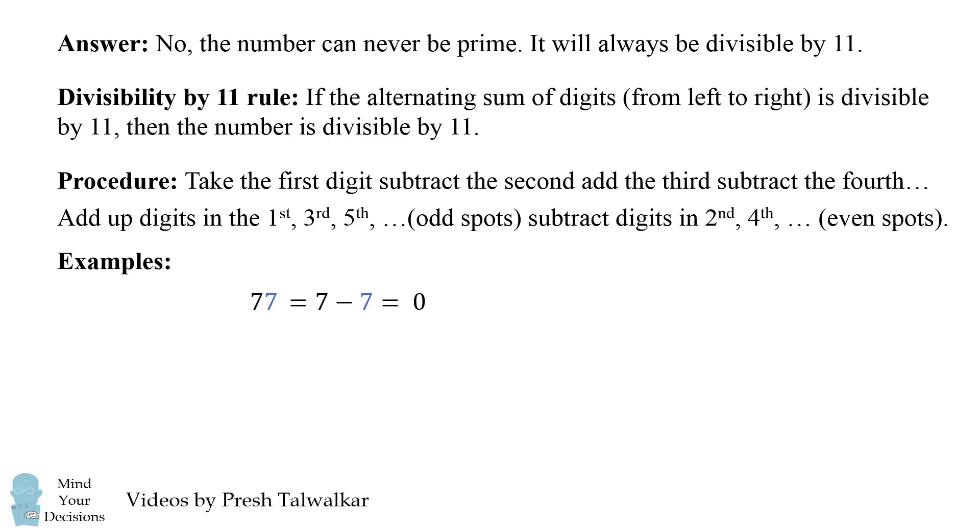77 will be 7 minus 7, which is 0. 0 is divisible by 11, so 77 is too.